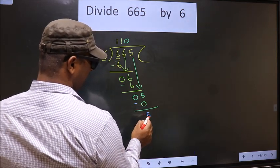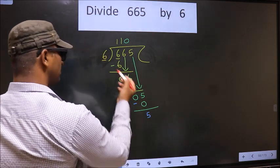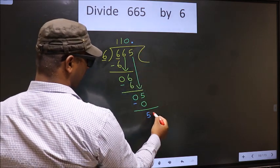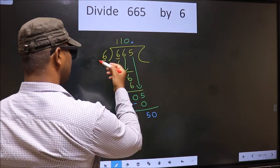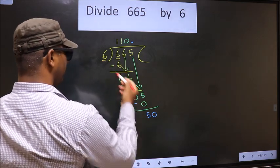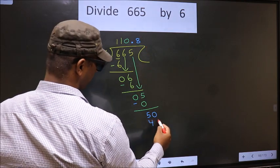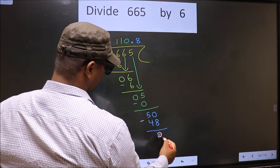Over here we did not bring any number down, and 5 is smaller than 6. So now you can put a dot and take 0 here. So 50, here 6. A number close to 50 in the 6 table is 6 times 8, which is 48.